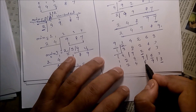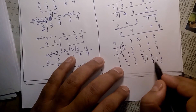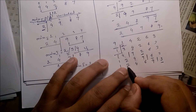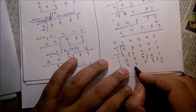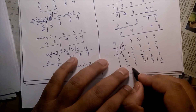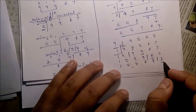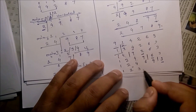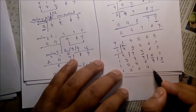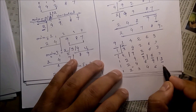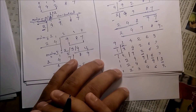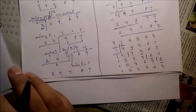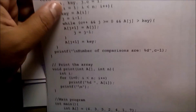Finally, take 3: 3 is lesser than 9, 3 is lesser than 6, 3 is lesser than 4, 3 is greater than 2. So we insert the value to get 1, 2, 3, 4, 6, 9. That's the insertion sort.